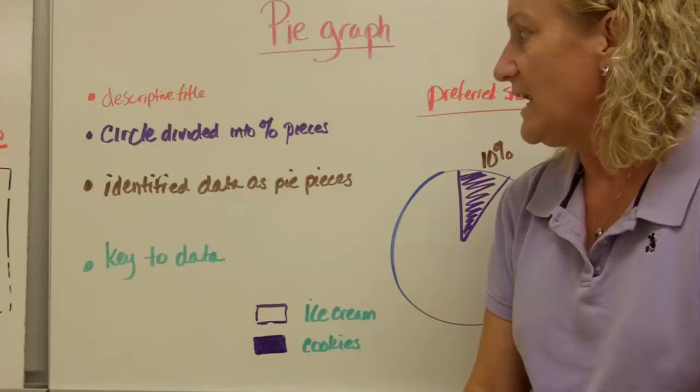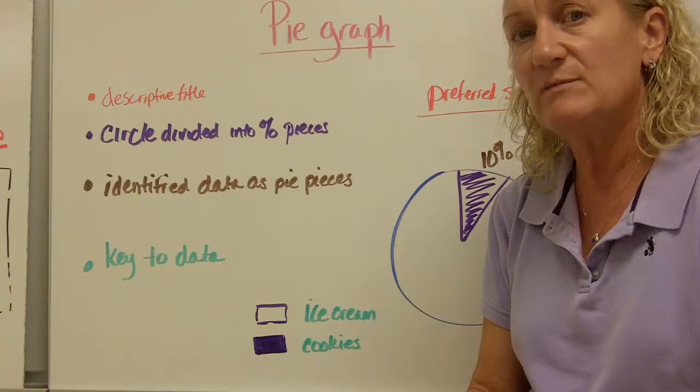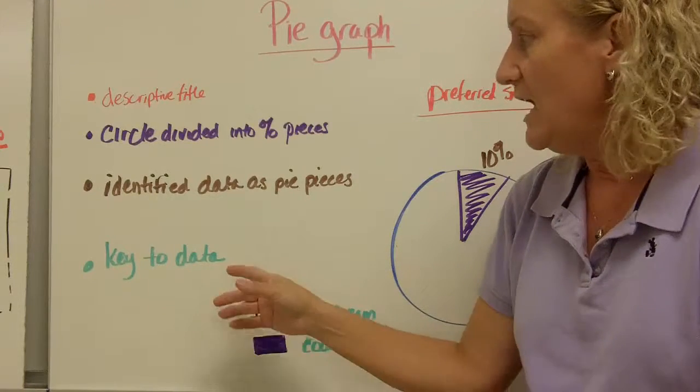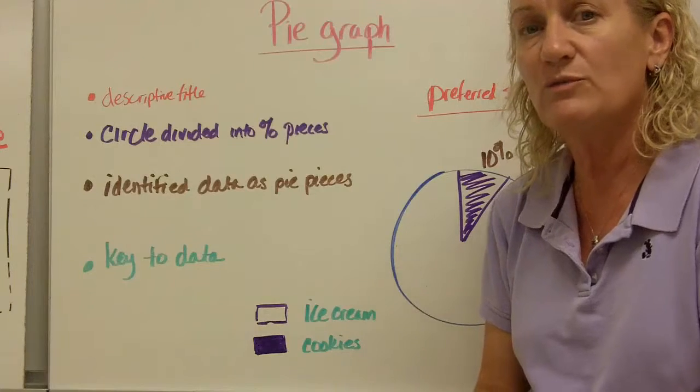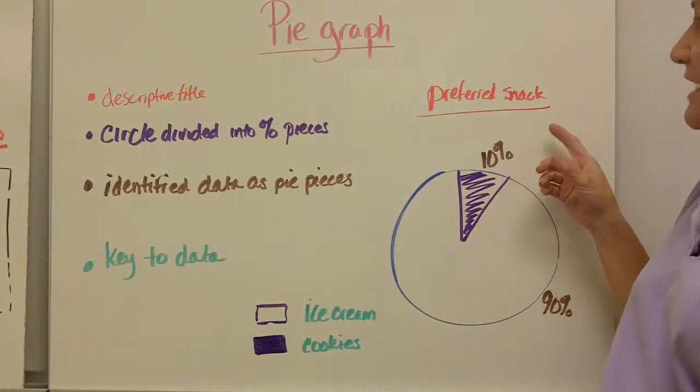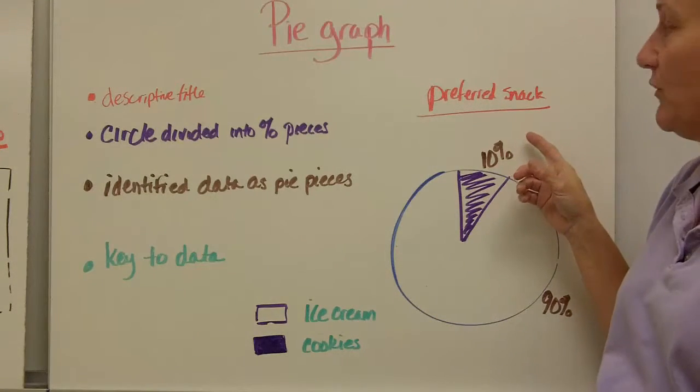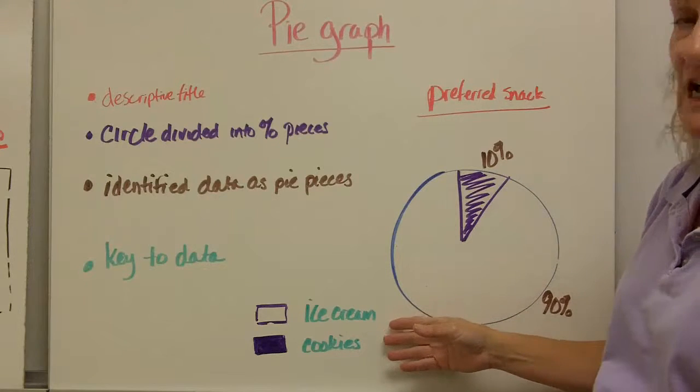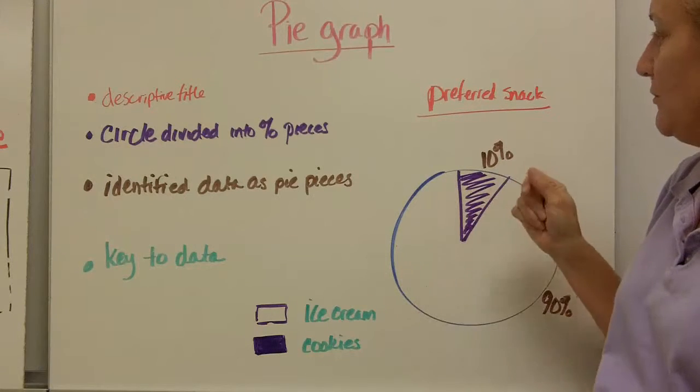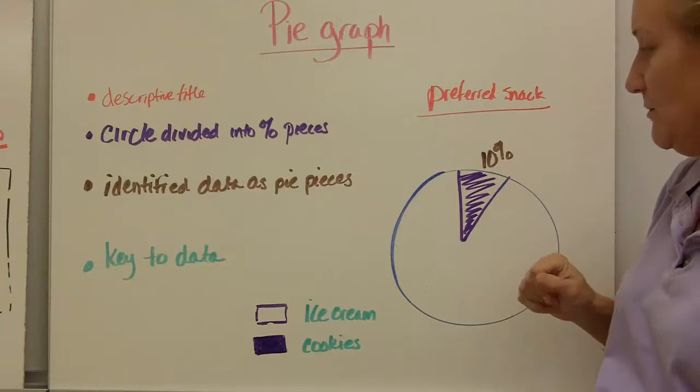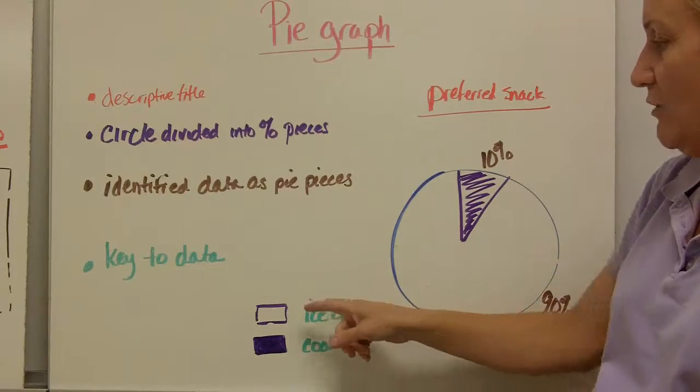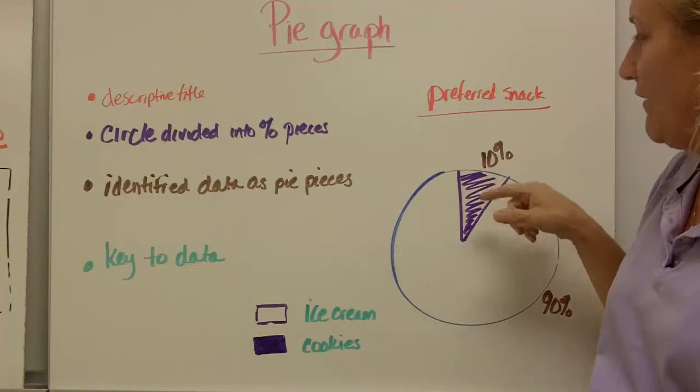Third, identify data as pie pieces. So your data needs to be identified, needs to be pie pieces. And finally, a key so that we know what's what. And in this example, you can see that we did a survey about preferred snack. And we only gave two choices, ice cream or cookies. 10% of the people chose cookies and 90% of the people chose ice cream. Here we have our key and here we have our pie graph.